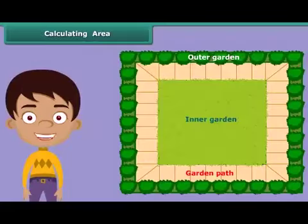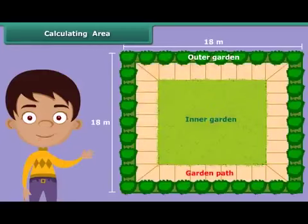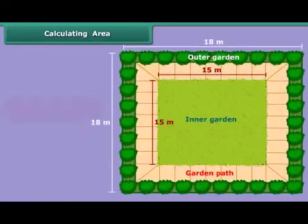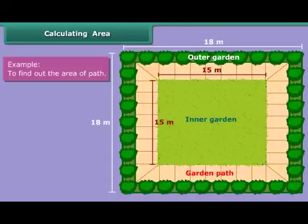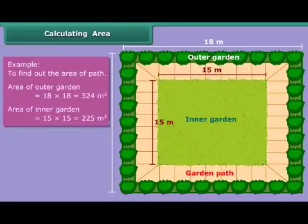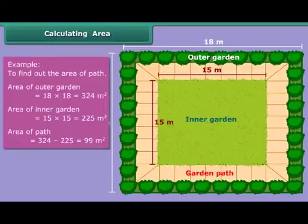Now let us advance a little further. Suppose there is a square garden of 18 meters. We want to make a provision for a path on all four sides, and the inner garden after the path is made should be 15 meters. To find the area of the path, calculate and deduct the area of the inner garden from the area of the outer garden. The area of the outer garden is 324 square meters and the area of the inner garden is 225 square meters. So the area of the path is 324 minus 225, which equals 99 square meters.